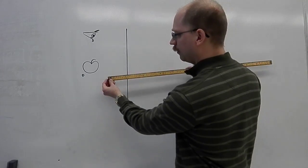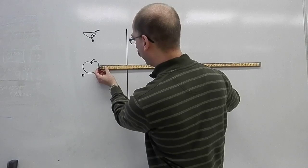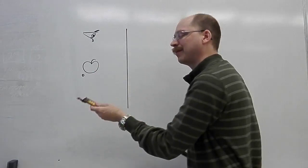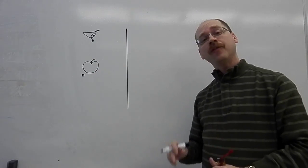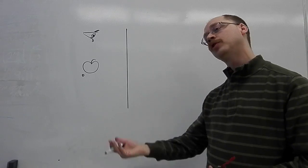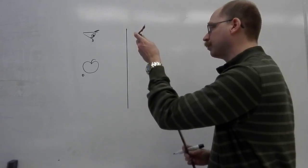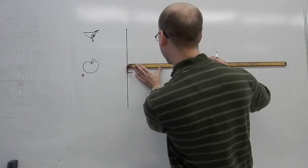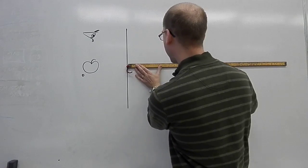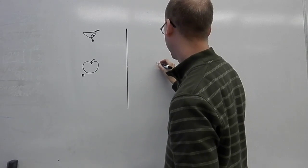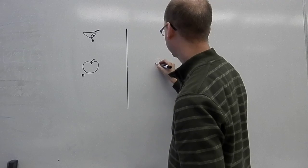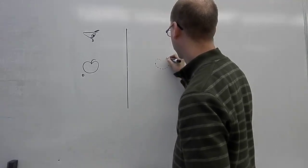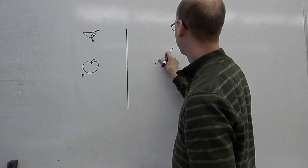So I very quickly measure this and I get that the object is about 16 centimeters in front of the mirror. That means that my image is going to appear 16 centimeters behind. So I'm going to measure this off a little bit here and I'm going to put my image.